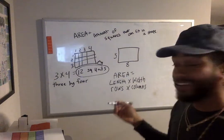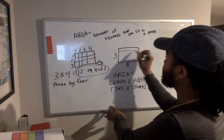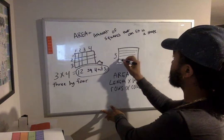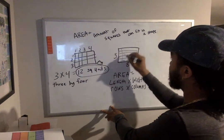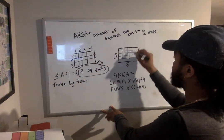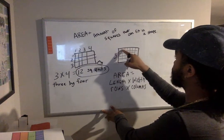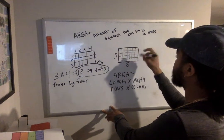I can make five rows. And I make eight columns. One, two, three, four, five, six, seven, eight.